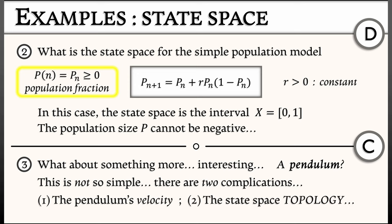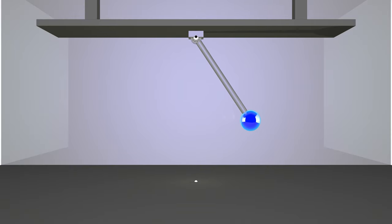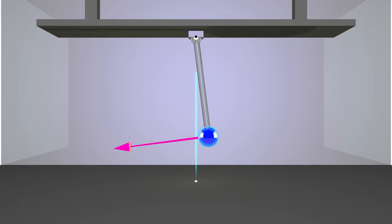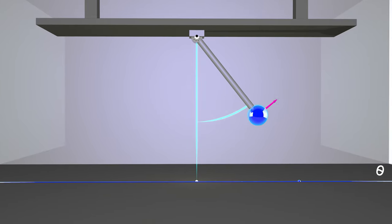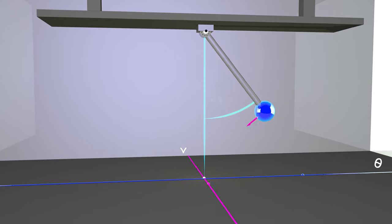One is the pendulum's velocity, and the second is the state space topology. What do I mean by these two things? First of all, the pendulum's velocity is also part of the state space. We can have pendula that have the same angle, but different velocities, and they really have different behaviors. You need to keep track of both the angle and the velocity.